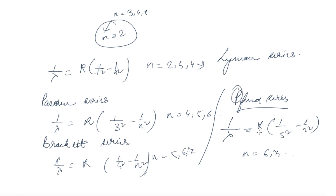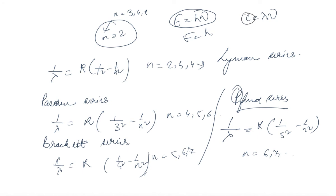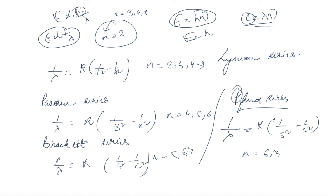It is also interesting to note that energy equals hν. Since c = λν, we get ν = c/λ. So when we write energy in terms of lambda, we say E = hc/λ. This means E is directly proportional to 1/λ — energy is inversely proportional to wavelength.